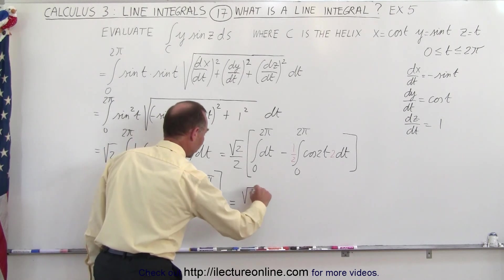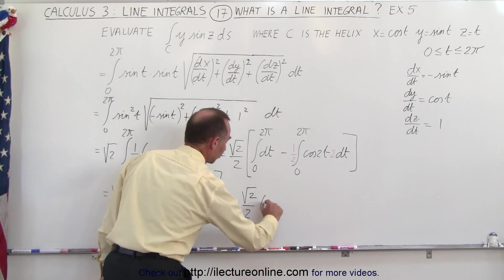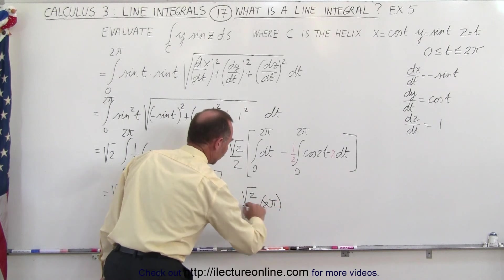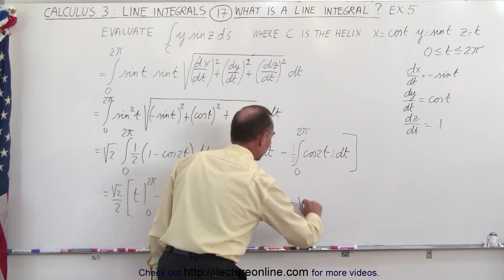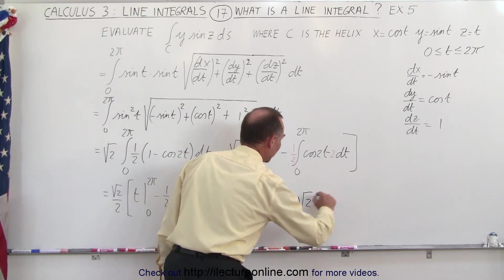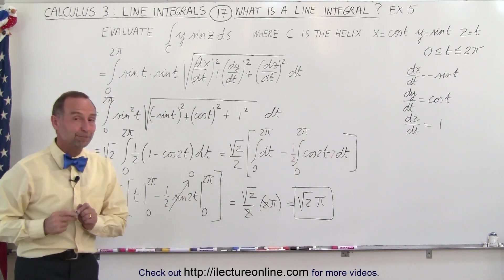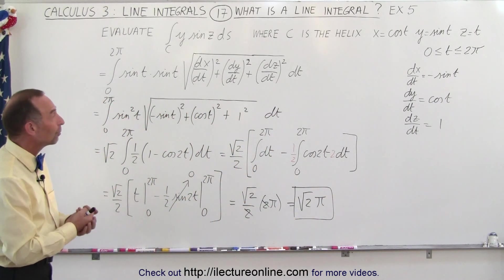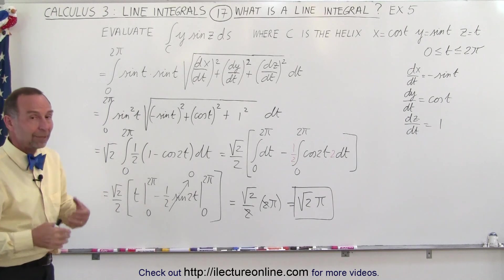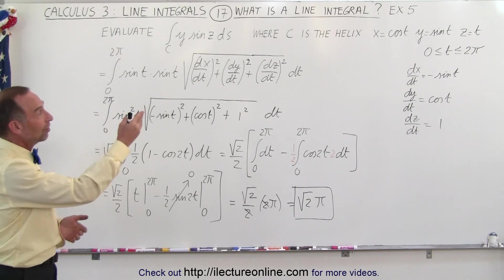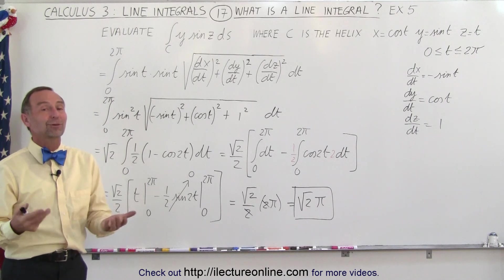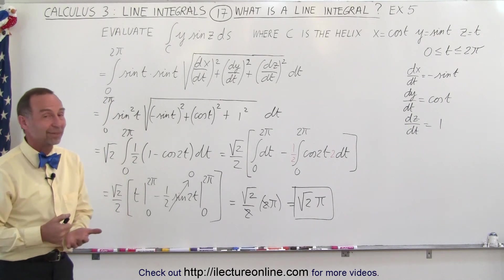So this becomes equal to the square root of 2 over 2 times 2π. The 2's cancel out, so this is equal to the square root of 2 times π, and that's the result of that particular integral. So now, after you've seen a number of these types of examples, it begins to get a little bit easier, especially since they already gave you the parametric equations, so that's how it's done.